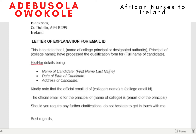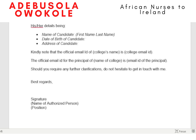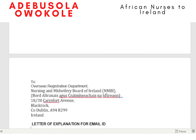In Ireland, names are written as first name then last name — not the other way around as in some African countries. Then include a note that the official email ID of the institution is this, and the official email ID of the principal or whoever filled the form is this. You don't need too many details — they only want to see the signature, the official stamp, the letterhead, and the email ID clearly stated.